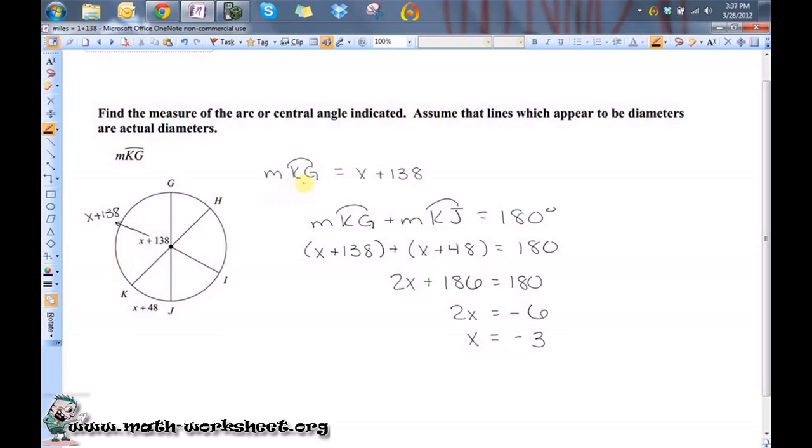Now, remember, we said the measure of arc KG was X plus 138. Now we know X, so I'm just going to substitute this in. So negative 3 plus 138. So the measure of arc KG is equal to 135 degrees.